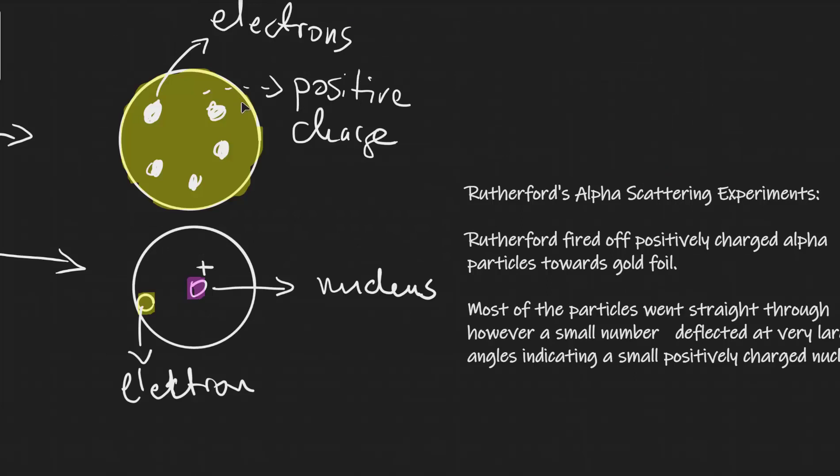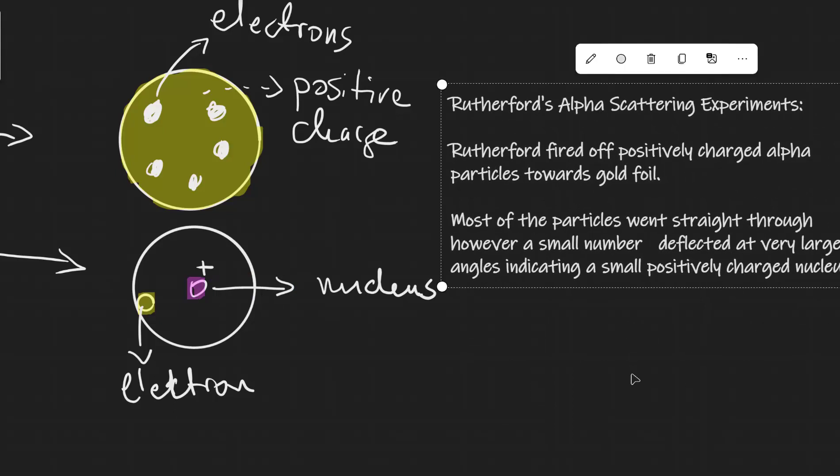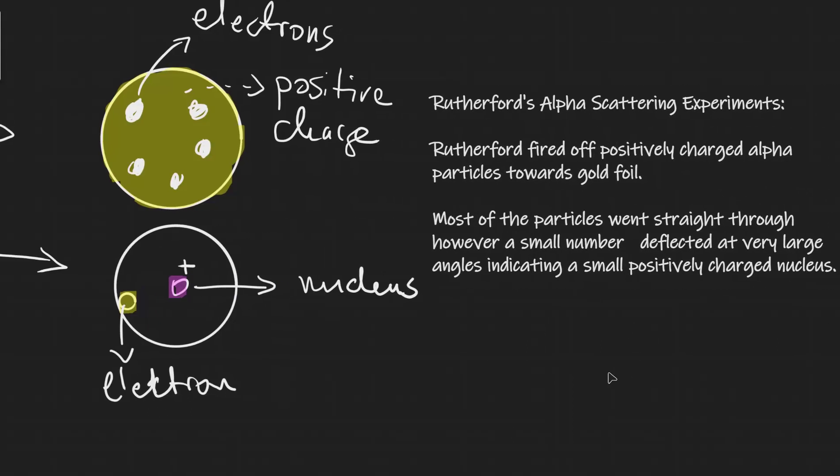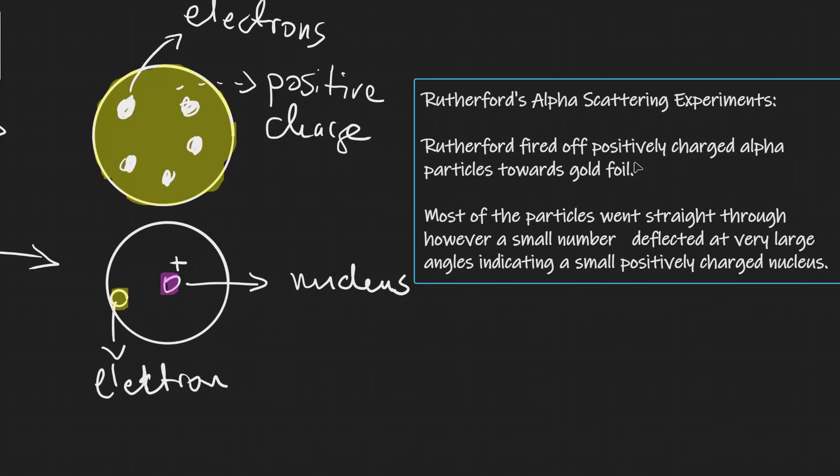Now how did we go from the plum pudding model to Rutherford's model? This was once again with Rutherford's alpha scattering experiments. What he actually did was he fired off positively charged alpha particles towards some gold foil, so he had some gold foil on one end and then he fired off some positively charged particles.